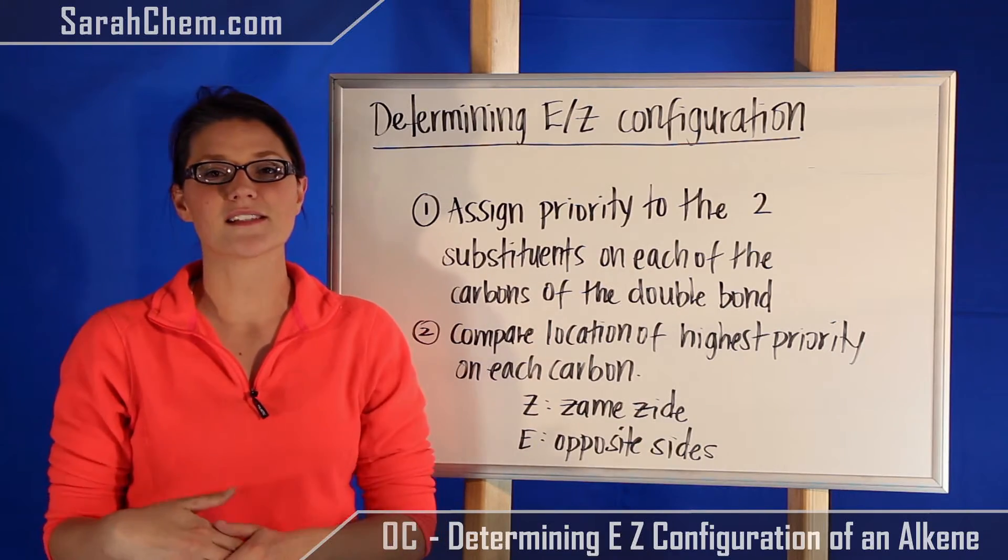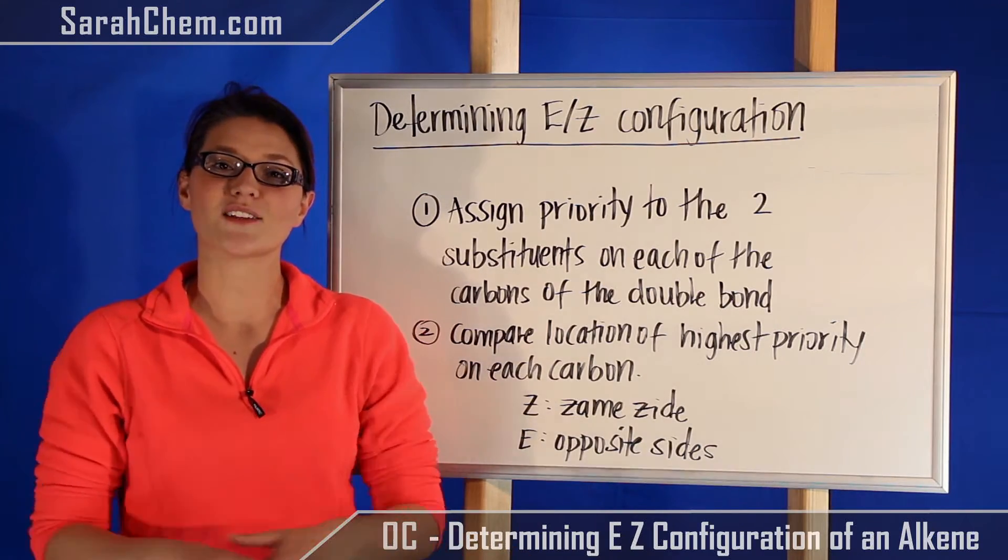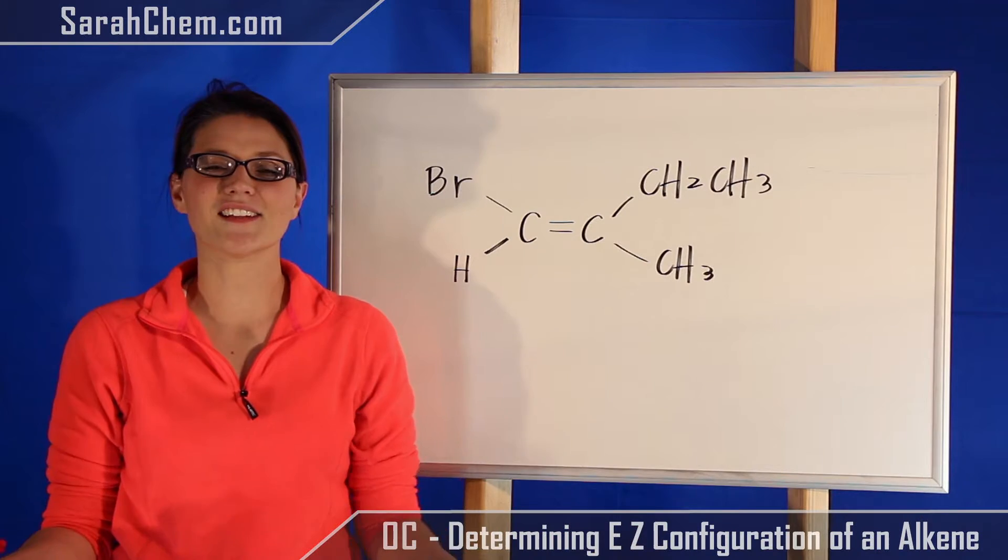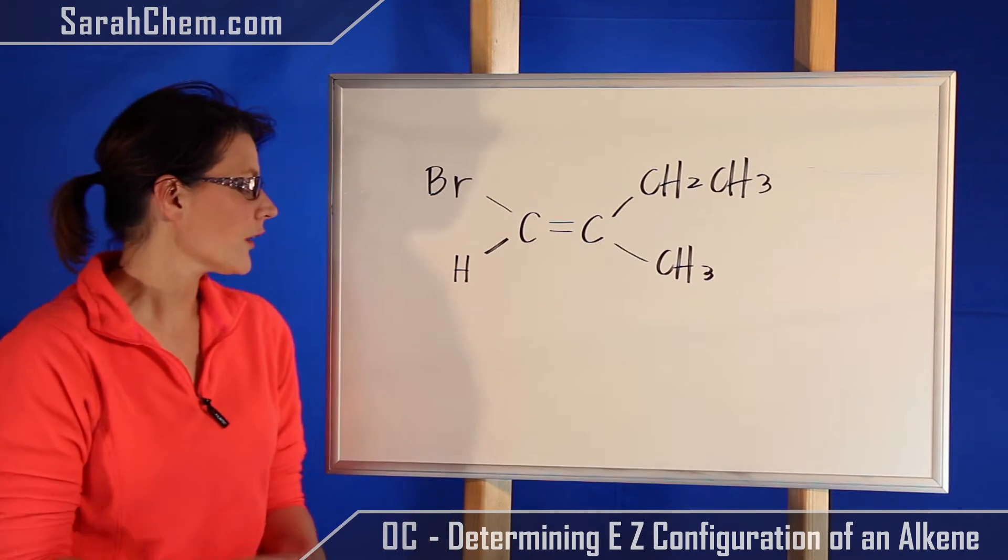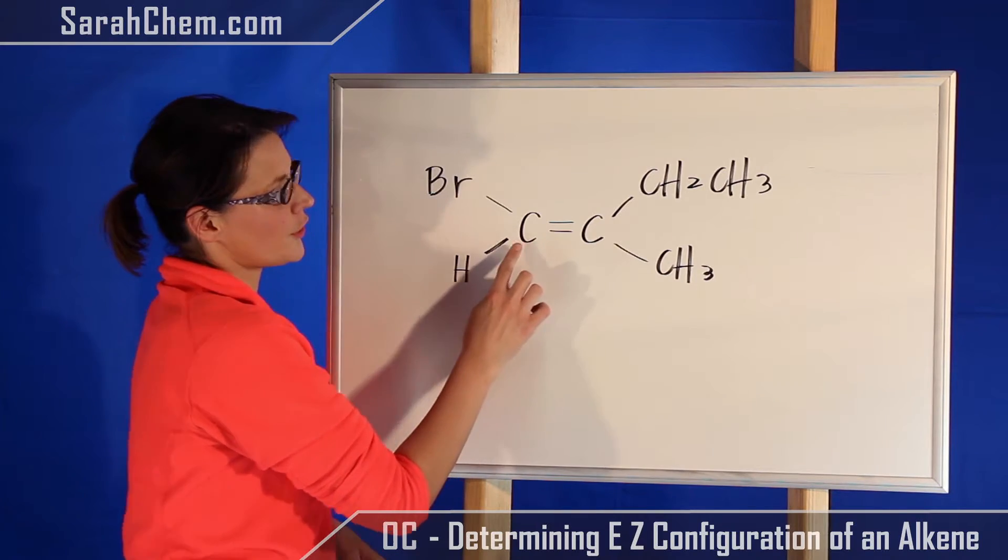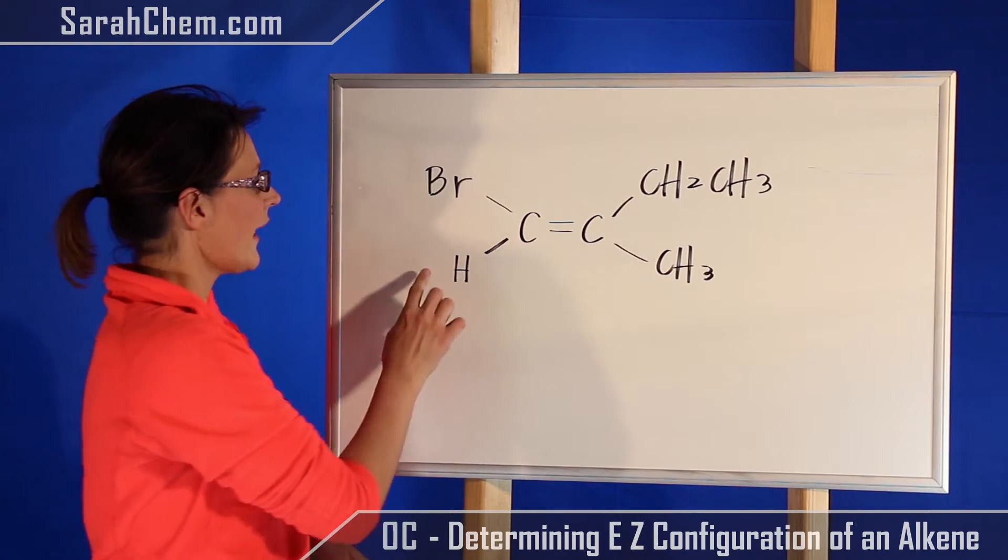So let's take a look at an example and figure out whether it's E or Z. Over here we have our carbons—these are the two that are participating in the double bond—and these are the substituents that we're looking at.